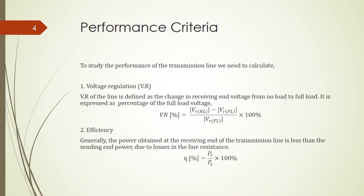After we establish that ABCD model, we can look into the performance criteria by calculating two variables. The first thing is voltage regulation, VR. It is defined as the difference in amplitude between the receiving end voltage in the case of having no load and the case of having full load, and then comparing with the full load voltage.